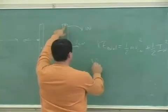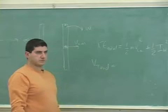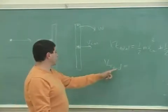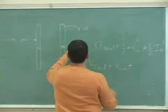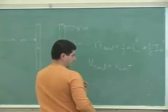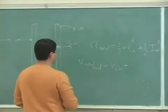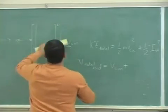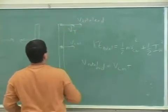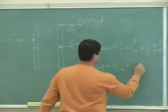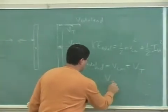What's the total velocity at the end point? V tangential end. The tangential velocity at the end is the sum of the translational — V total at the end, the total velocity at the end, is the sum of the translational velocity plus the center of mass velocity. And then the tangential velocity is equal to R omega.